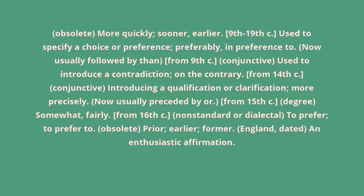From the 9th century, conjunctive: used to introduce a contradiction — on the contrary. From the 14th century, conjunctive: introducing a qualification or clarification — more precisely, now usually preceded by 'or'. From the 15th century.